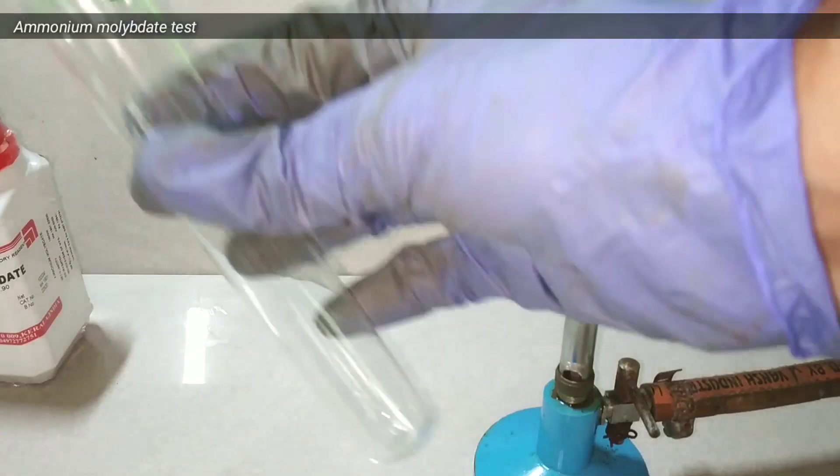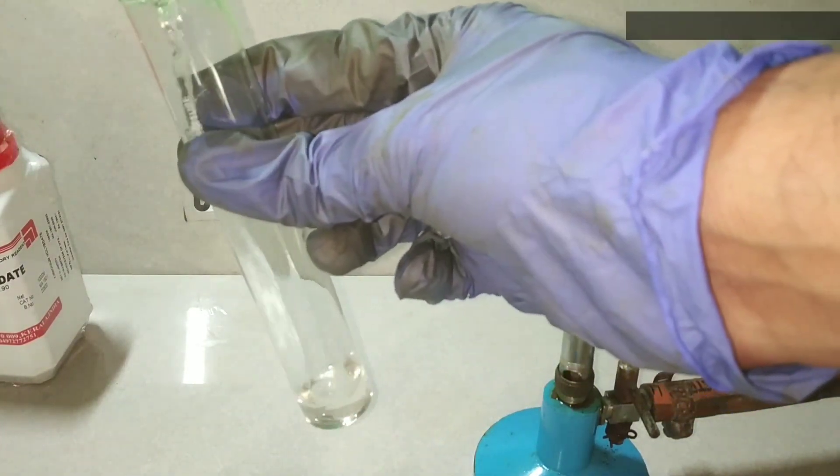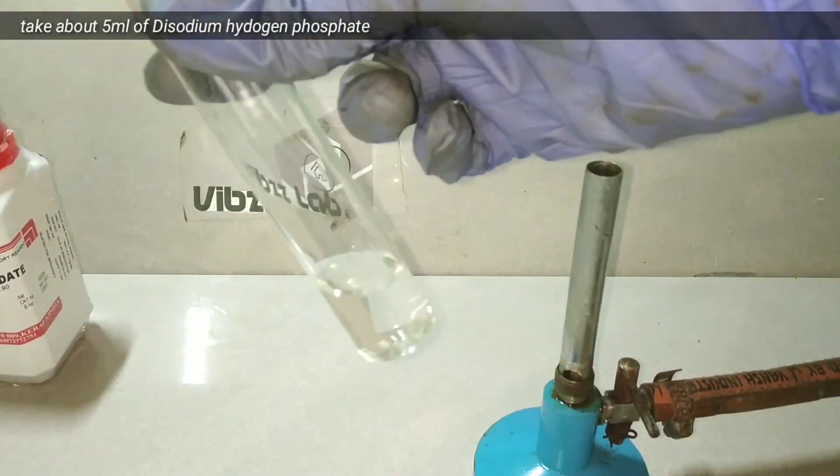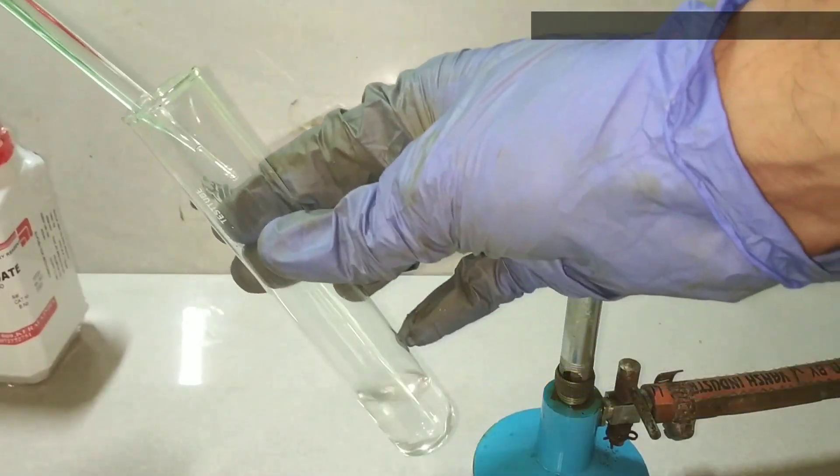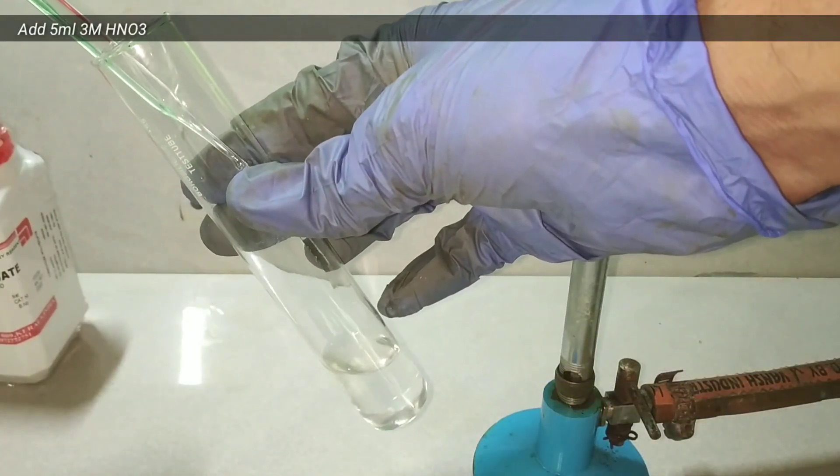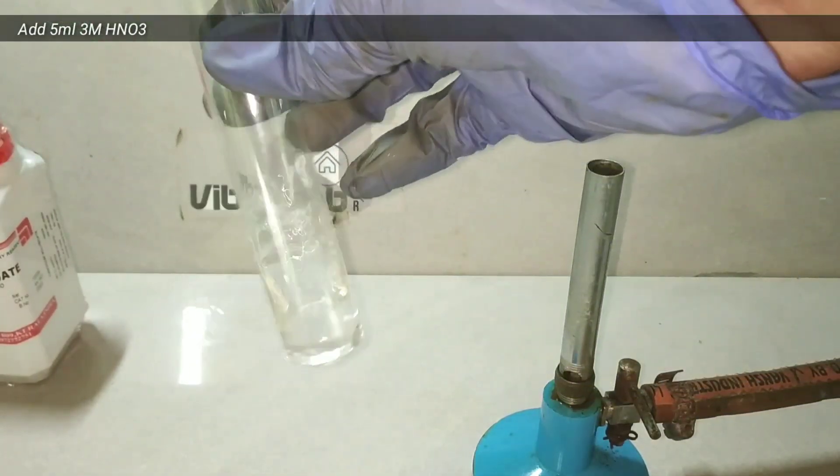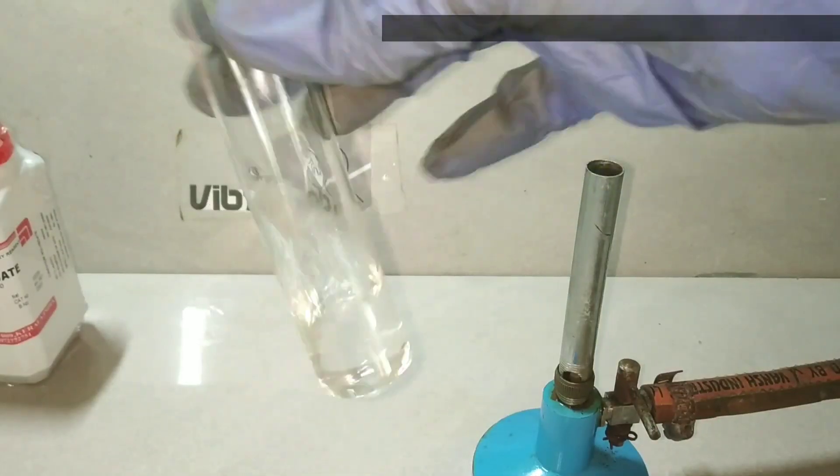Next, we do the chemical test for phosphate. For that, we take some solution of disodium hydrogen phosphate in a test tube, and into that we add 5 milliliters of 3 molar nitric acid and mix well.